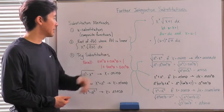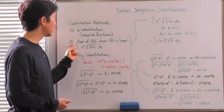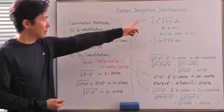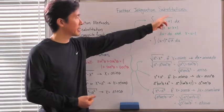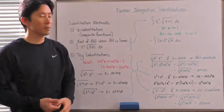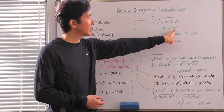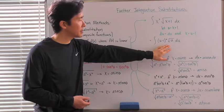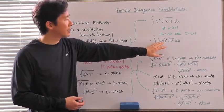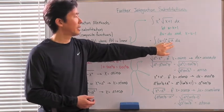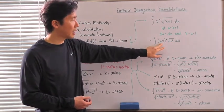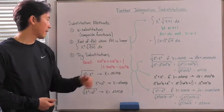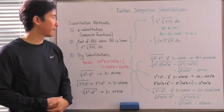The other two we'll look at are the root of f(x) where f(x) is linear, and trig substitutions. For the root of f(x) where f(x) is linear, consider the integral of x² times the square root of (x+1) dx. If we use a u-substitution, let u equal x+1, then du equals dx and x equals u minus 1. Everything becomes in terms of u, and we can expand and distribute u to the one-half power to each term, then integrate.